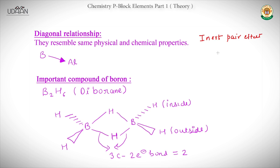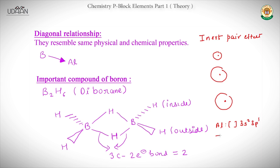As we know, while moving down the group, atomic size increases. Let's take the example of Aluminium. Its configuration in the outermost shell is 3s², 3p¹. Now let's also take Thallium, whose configuration is 6s², 6p¹.